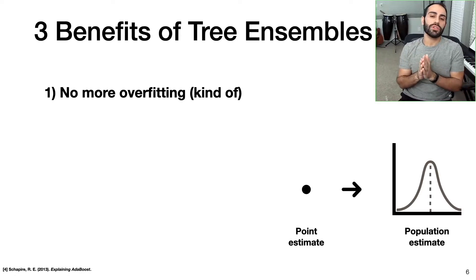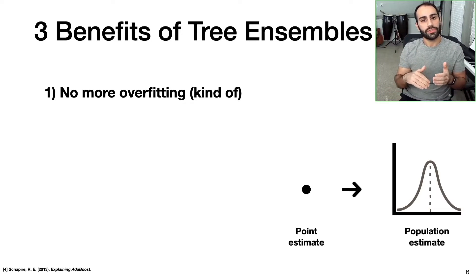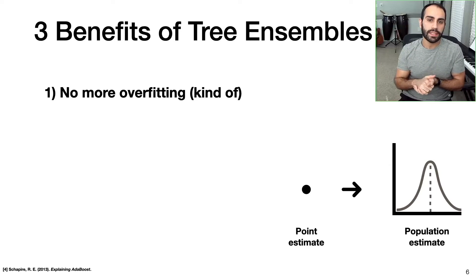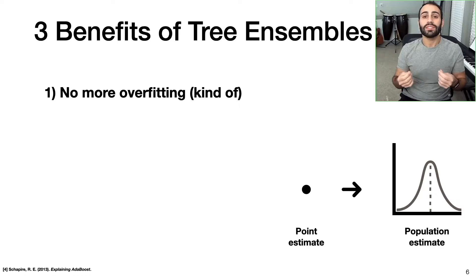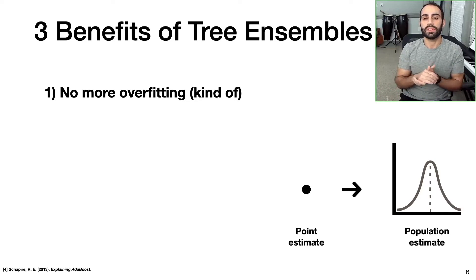The first key benefit is that decision tree ensembles are much more robust to the overfitting problem than single decision trees. Overfitting is when your machine learning model over-optimizes to a single training data set in such a way that when you try to apply it to new data, it doesn't work as well. This turns out to be a pretty big problem for single decision trees, but it tends to go away when you start aggregating groups of decision trees together.